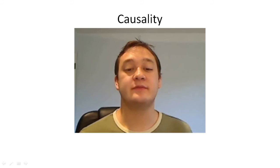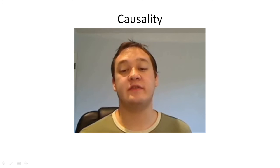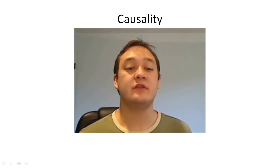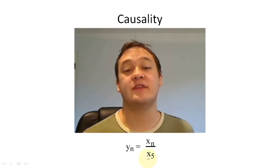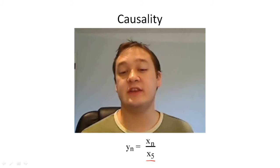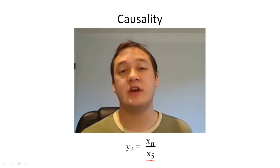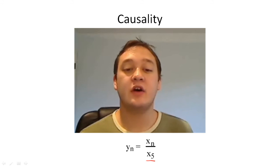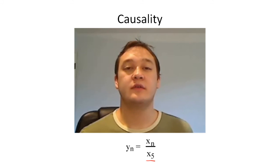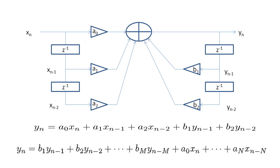An example non-causal system would be if we wanted to divide all samples of x sub n by the maximum value in x sub n. For example, if the maximum value of x sub n was at x sub 5, then the filter would look like this. Notice that x0, x1, up to x4 all depend on a future sample, x5. Systems that look like this will always be causal.